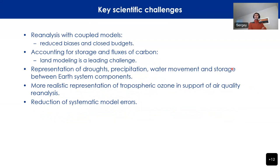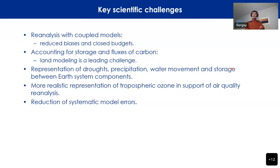Wrapping up with a couple of scientific challenges: coupled model reanalysis is still in its infancy. We need to work on reducing biases and closing budgets. We need to account for storage and flux of carbon between components, with land modeling identified as a leading challenge for carbon storage. We need a better representation of droughts, precipitation, and water movement between Earth system components. We also need more realistic representation of tropospheric ozone in support of air quality reanalysis, alongside continuous work on reducing systematic model errors.